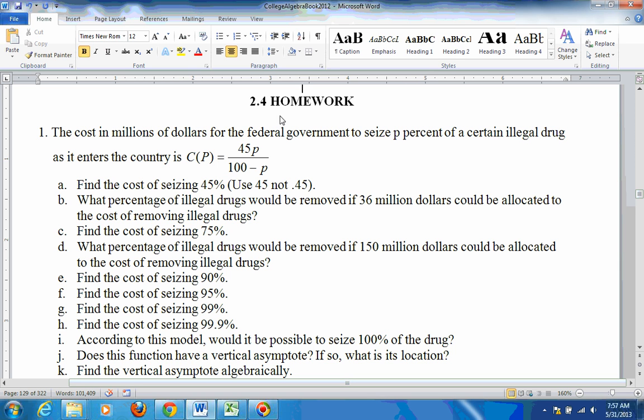Okay, here are some problems from section 2.4 homework. Problem number one says the cost in millions of dollars for the federal government to seize P% of a certain illegal drug as it enters a country is C(P) equals 45P over 100 minus P. And then it says find the cost of seizing 45%. You could do that by hand if you wanted to. Take 45 times 45 divided by the quantity 100 minus 45, and that will give you the cost in units of millions of dollars.